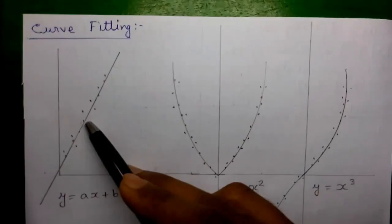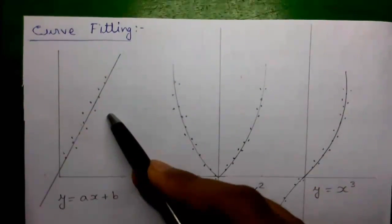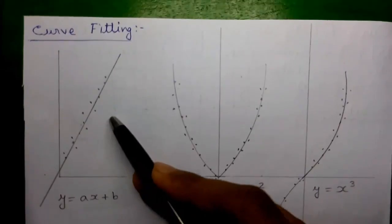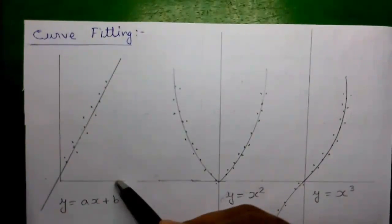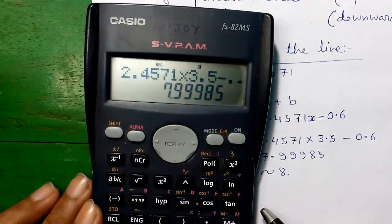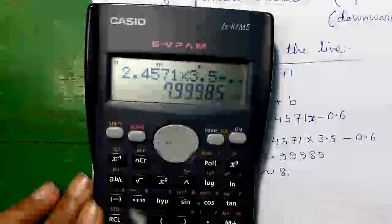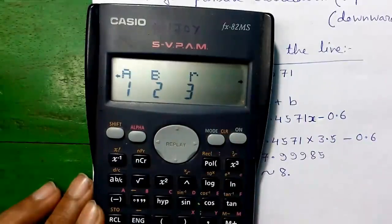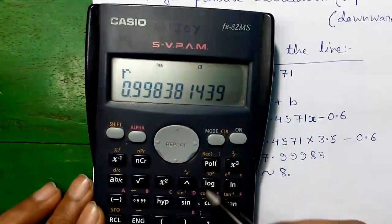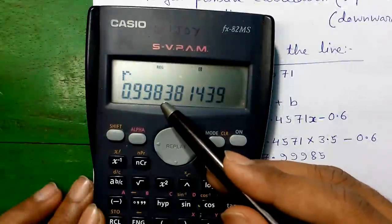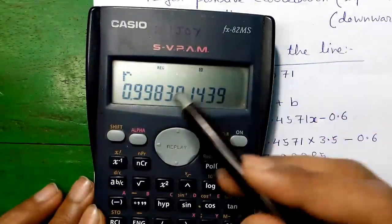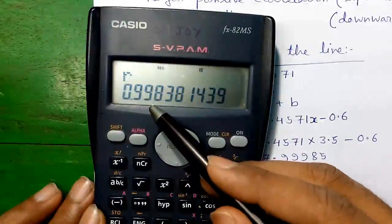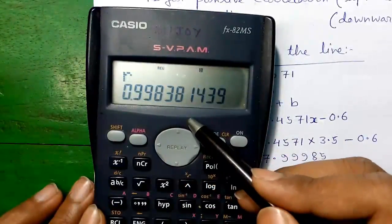The correlation coefficient tells us about the fitness of the curve. If you are not using algebraic curve fitting but a graphical method, you can't easily visualize how well the curve fits the points. So in algebraic curve fitting, the correlation coefficient value tells us the fitness. To find R on the calculator, press Shift 2, joystick right 2 times, then 3 for R, and press equals — R = 0.998, nearly equal to +1. So our line is upward and the points are very close to the line.